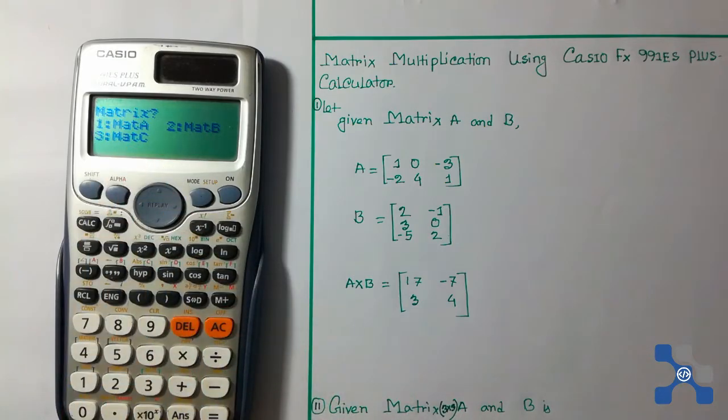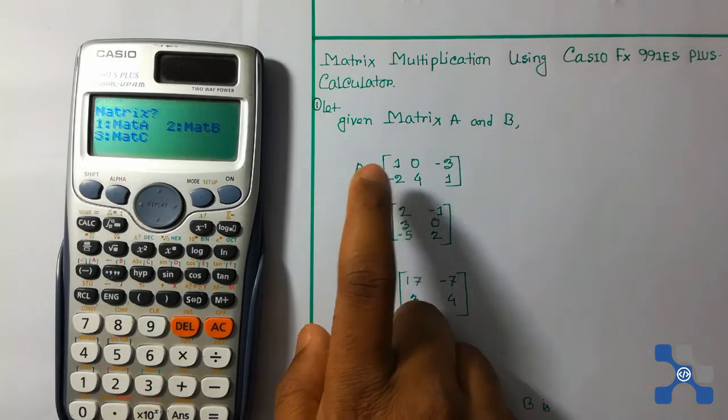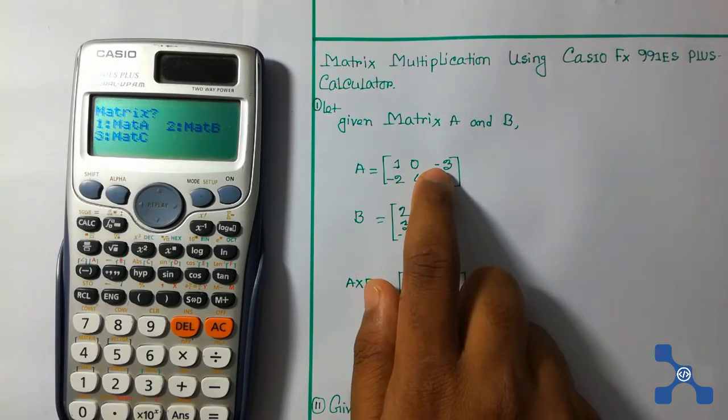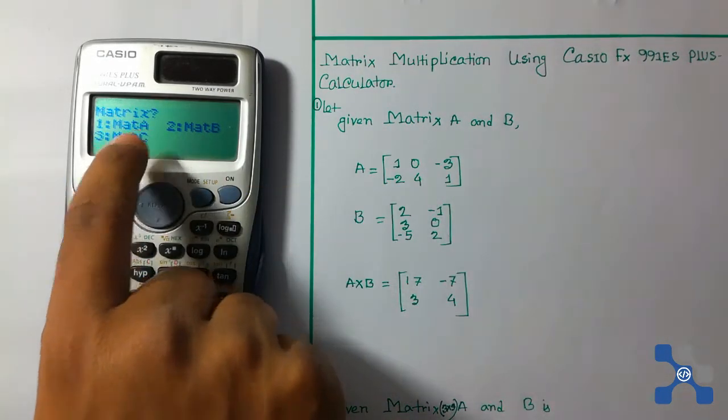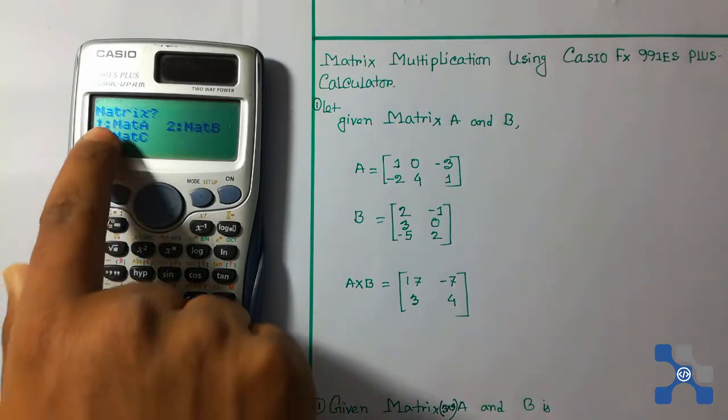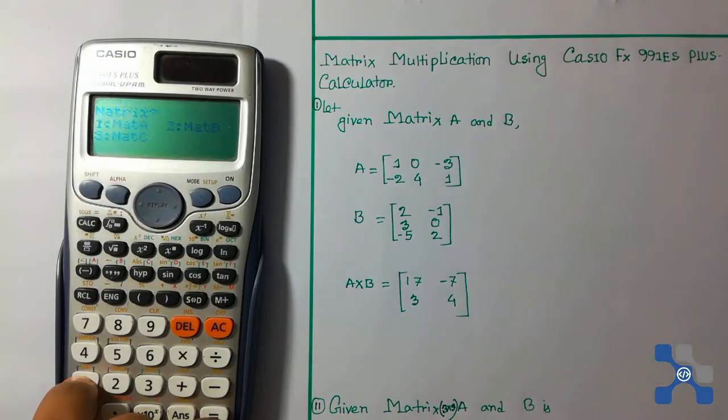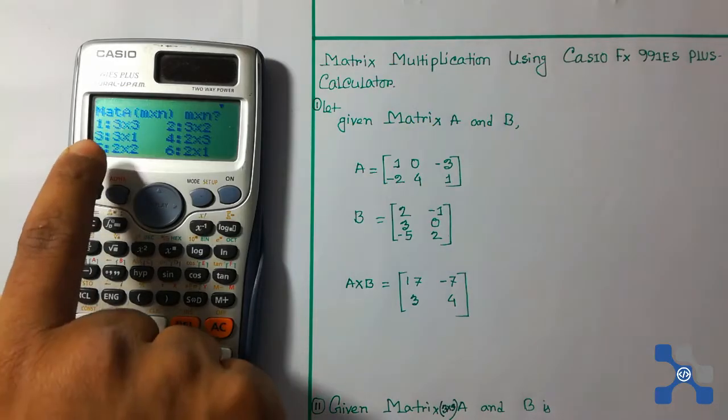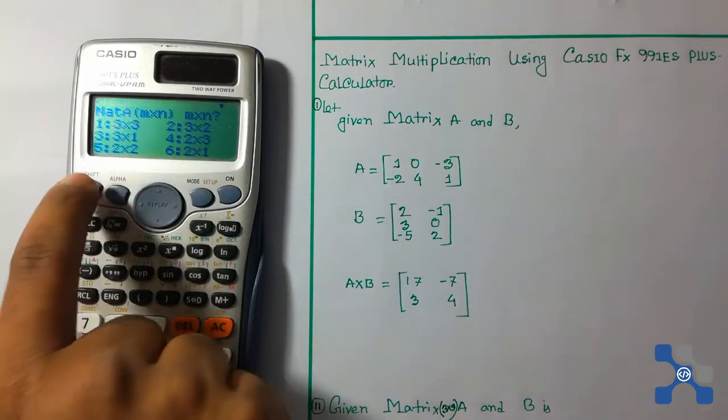We can use any one of these. Now I will load the A matrix. To load matrix A, press 1. Here the calculator displays different kinds of dimensions.